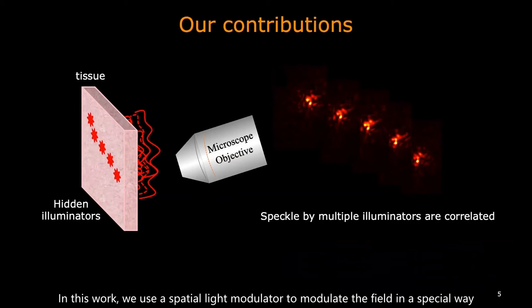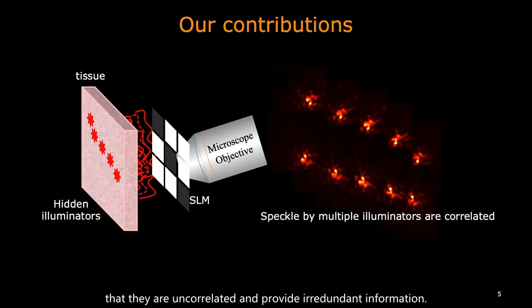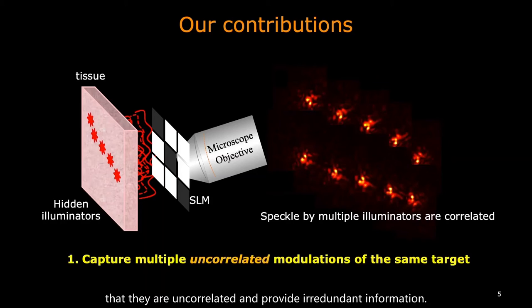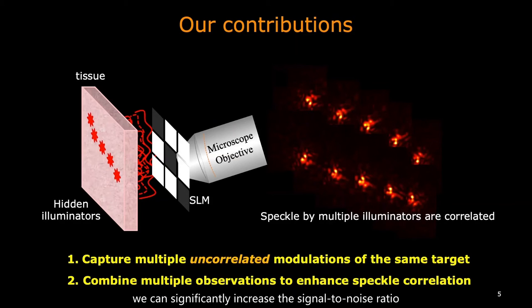In this work, we use a specialized modulator to modulate the field in a special way so that the measurements are uncorrelated and provide non-redundant information. By capturing and combining multiple modulations of the same target, we can significantly increase the signal-to-noise ratio of the correlation and improve reconstruction.